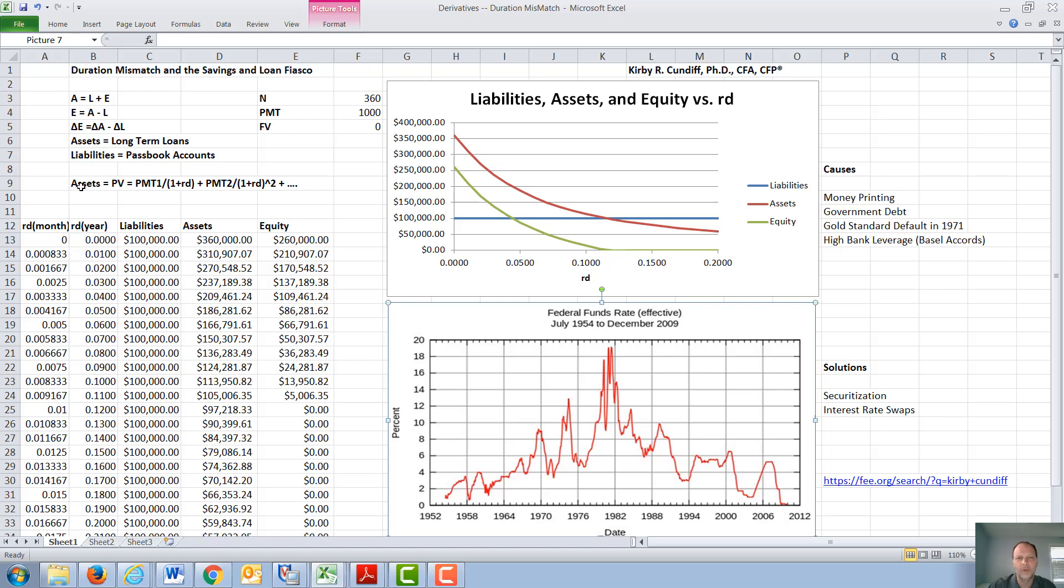To value a long-term loan, it's basically valued like a bond, except each payment is the same as they amortize on out. So assets is just the present value of a series of payments. For a typical fixed-rate 30-year home loan, you have 360 payments, one per month for 30 years. We'll consider a house with a monthly payment of $1,000, and after all the payments are made, the future value is zero.